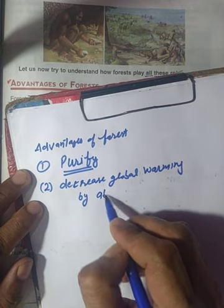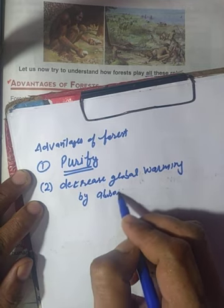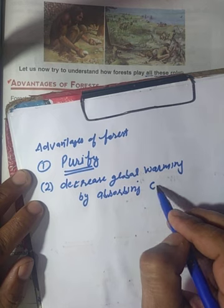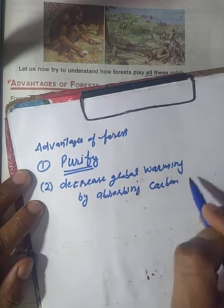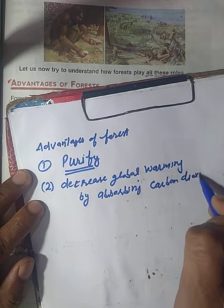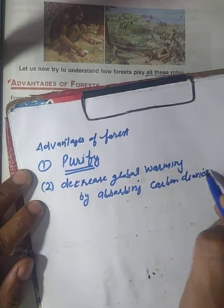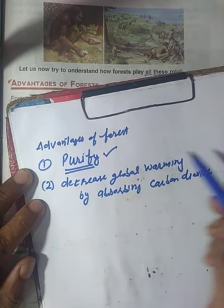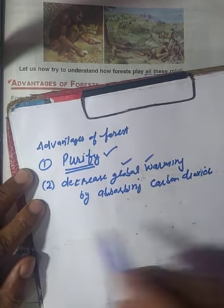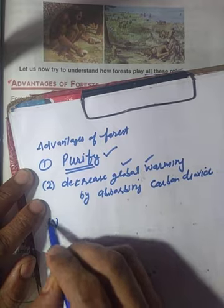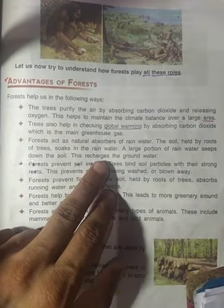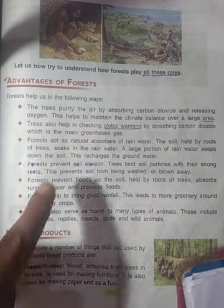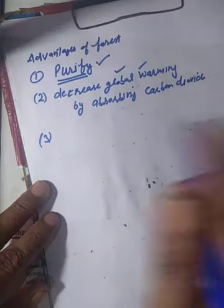It decreases global warming by absorbing carbon dioxide. Third is, it acts as a natural absorber of rain water and helps recharge ground water.